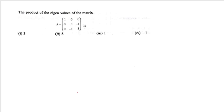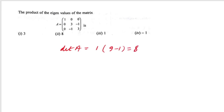Find the product of eigenvalues of the matrix. Product of eigenvalues = det(A). Expanding: 1·(3·3−1·1) = 1·8 = 8. The correct option is 8.